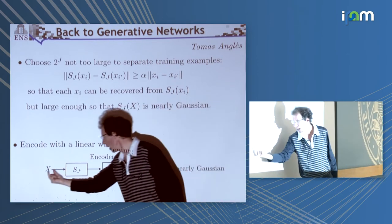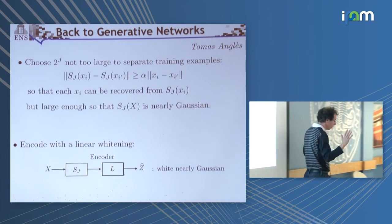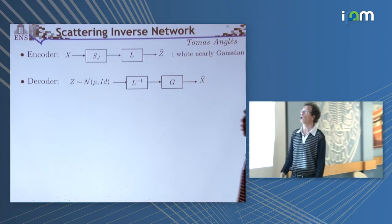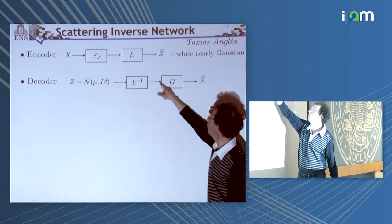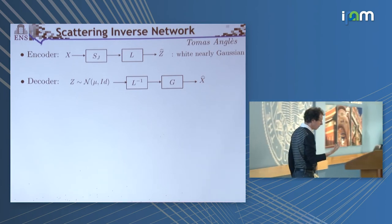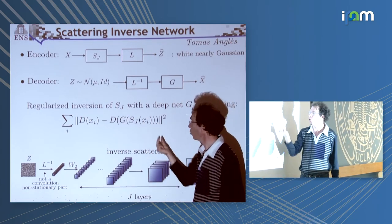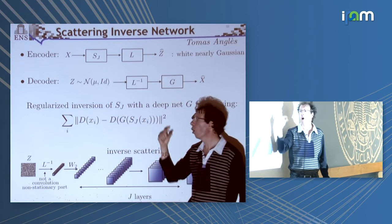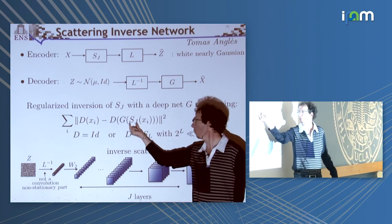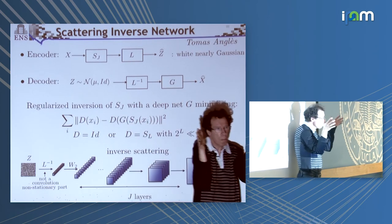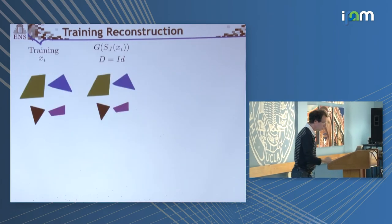Here's the encoding: we begin with x, do the scattering transform, then do a whitening with a linear operator to get white noise which is nearly Gaussian if the scale is big enough. Then the decoder takes white noise, inverts the whitening operator, and then inverts the scattering transform with a generator. What this generator does is essentially a regularized inversion — it imposes that the inversion must be good on each training example xi. For the discriminative metric, either we use identity — not such a great choice — or something very close to the scattering transform but at a finer scale.